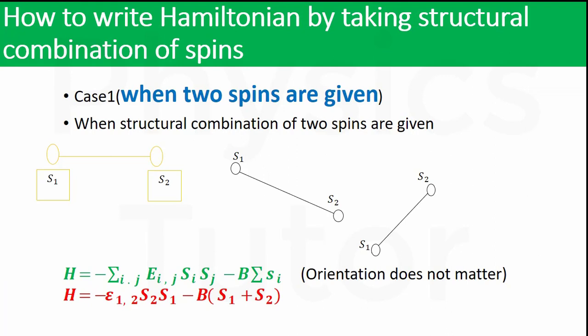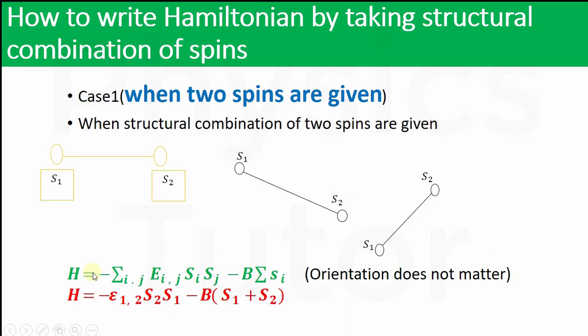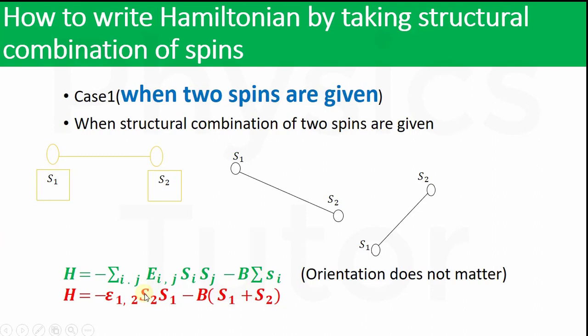For the case when two spins are given — first particle spin S1 and second particle spin S2 — we write the Hamiltonian. In the formula, we put the spin values: first write the second spin then the first spin, then add their spin values together with the magnetic field B. This gives us the Hamiltonian value for a two-spin system.